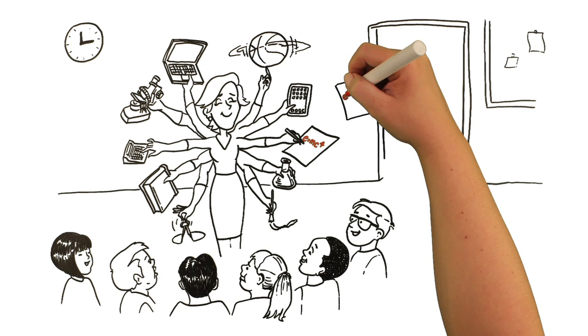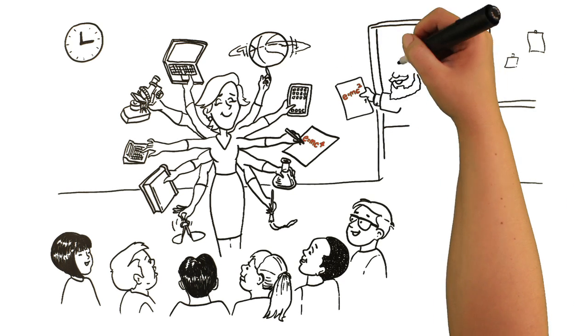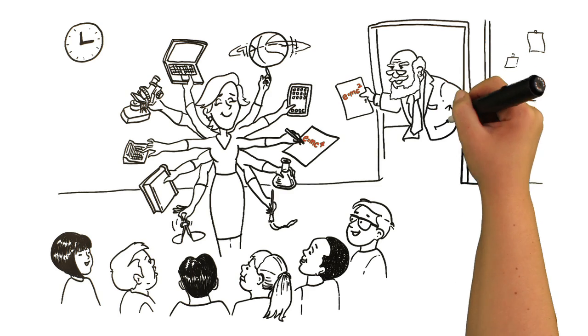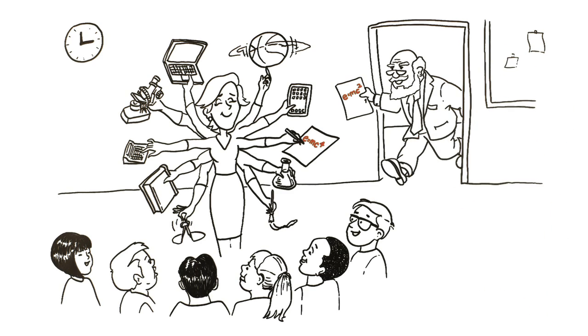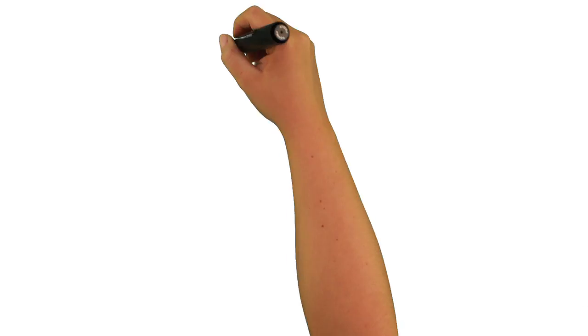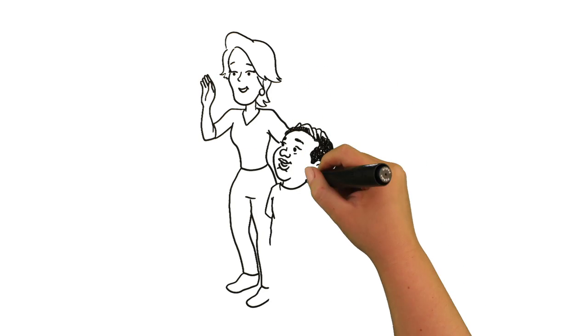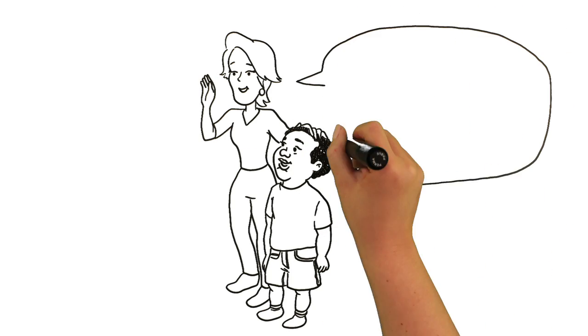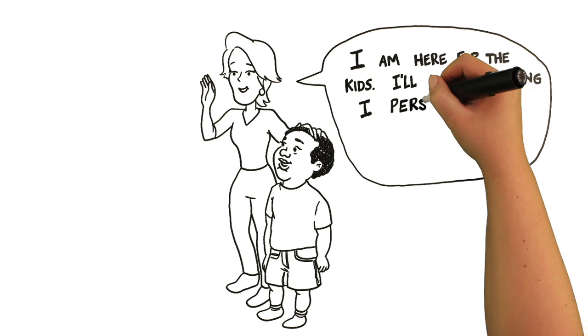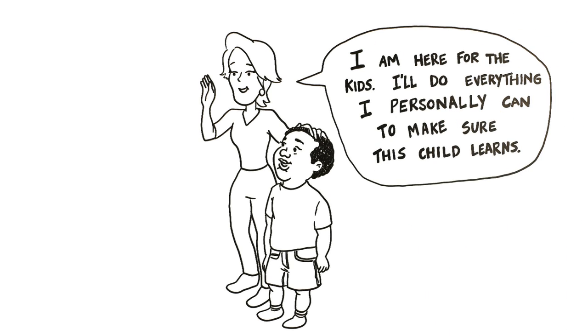I think you need teachers who have a professional relationship with other teachers, who are willing to come into each other's classrooms to comment on their teaching. And finally, I think you need a code of professional ethics that really presses them to say, I am here for the kids. I'll do everything I personally can to make sure this child learns.